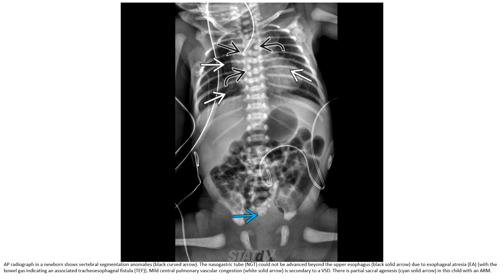AP radiograph in a newborn shows vertebral segmentation anomaly. The nasogastric tube could not be advanced beyond the upper esophagus due to esophageal atresia, indicating an associated tracheoesophageal fistula. Myocardial pulmonary vascular congestion is noted. There is partial sacral agenesis in this child with VACTERL association.